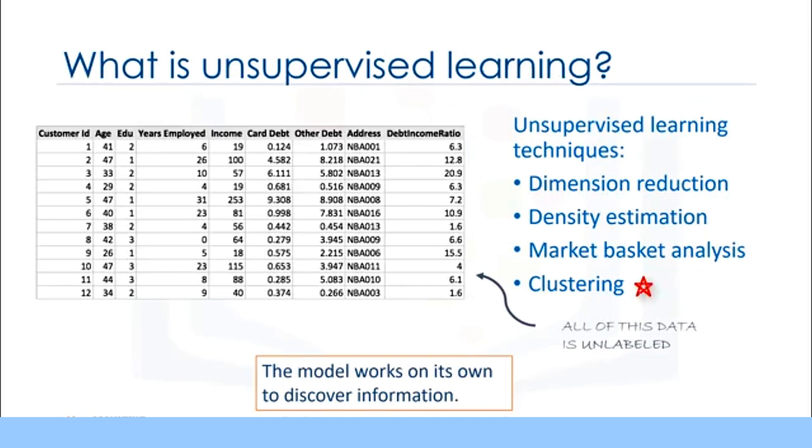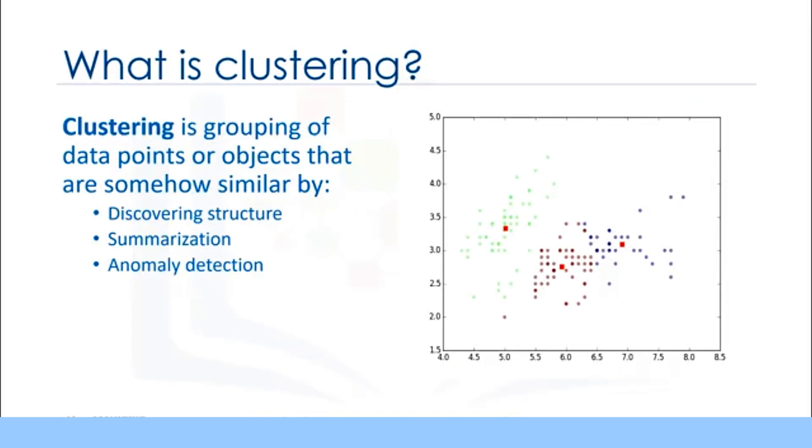And finally clustering. Clustering is considered to be one of the most popular unsupervised machine learning techniques used for grouping data points or objects that are somehow similar. Cluster analysis has many applications in different domains whether it be a bank's desire to segment its customers based on certain characteristics or helping an individual to organize and group his or her favorite types of music. Generally speaking though clustering is used mostly for discovering structure, summarization and anomaly detection.